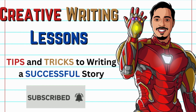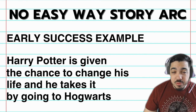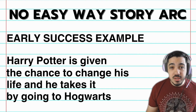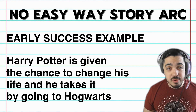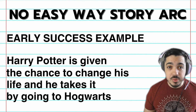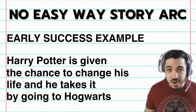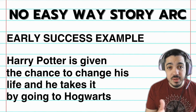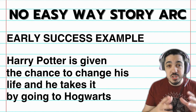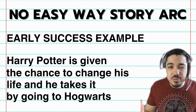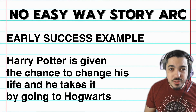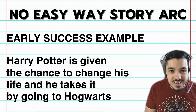The perfect example for Harry Potter's Early Success is when he's given the opportunity to go to Hogwarts — when Hagrid shows up on his birthday and tells him he's a wizard. Harry doesn't believe it at first, but Hagrid explains all the magical, unexplainable things that have been happening. Harry takes the opportunity and goes to Hogwarts. That is the Early Success.